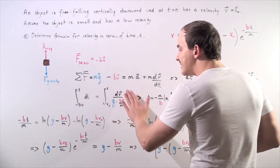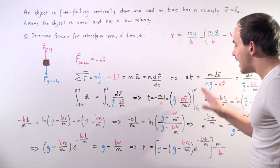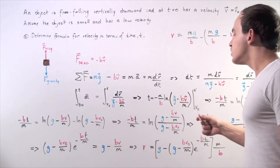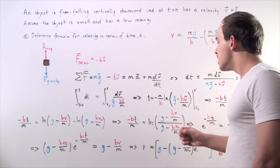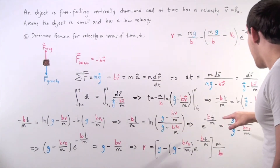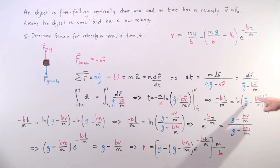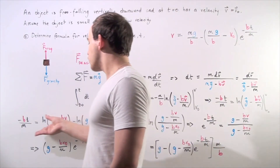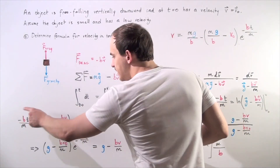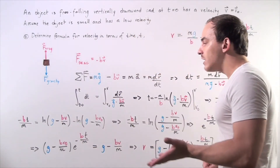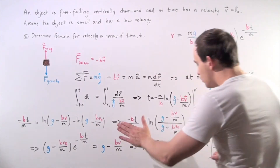If we take the integral of the right side, we get the result with a factor of negative m divided by b on the outside. So we multiply both sides by negative b divided by m to bring that term to the left side, giving us: negative b times t divided by m equals the natural log of that expression. Now we evaluate the right side from v naught to v, and we use our log laws to combine the two natural log terms — we simply divide, giving us minus bt over m equals the natural log of that whole expression.